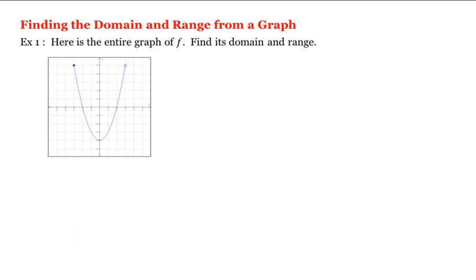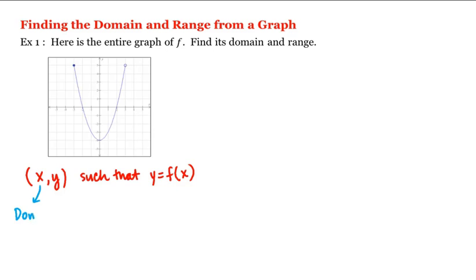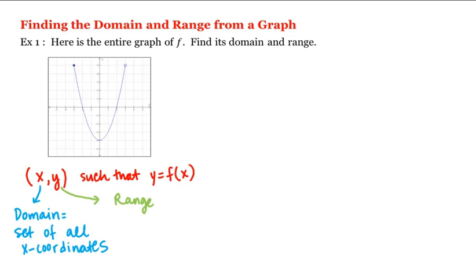Let's look at finding the domain and range of a function from its graph. For example, here's the graph of f — let's find its domain and range. Remember that the graph of f is the set of all points such that y is equal to f. The domain is the set of all x-coordinates of points on the graph, and the range is the set of all y-coordinates of points on the graph.